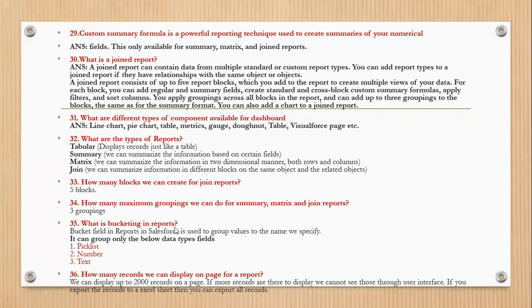What is bucketing in reports? Bucket fields in reports in Salesforce are used to group values to a name we specify. It can group only data types of fields such as number, picklist, and text. How many records can we display on a page in reports? We can display 2,000 records on the page. If more records need to be displayed, we cannot see those on the user interface. If you export the records to Excel, then you can export all records.